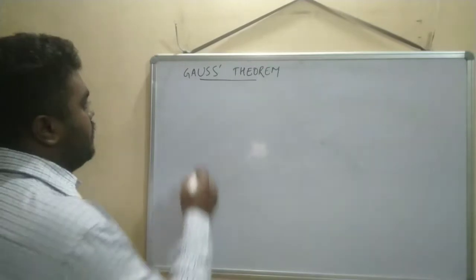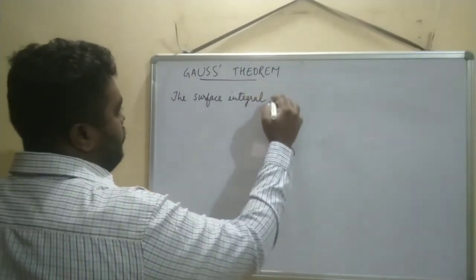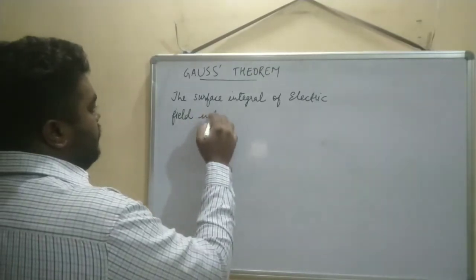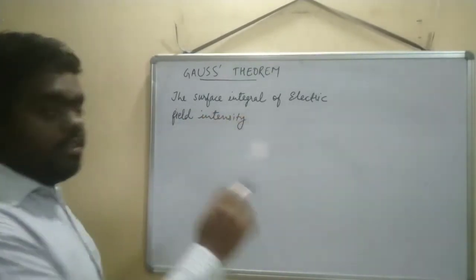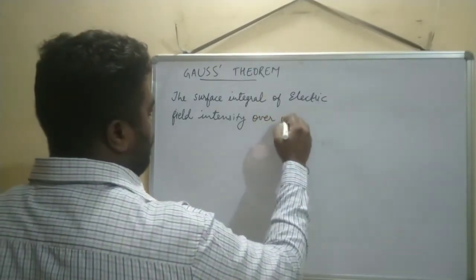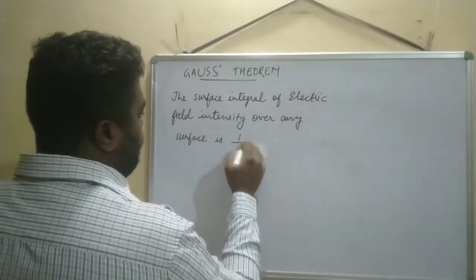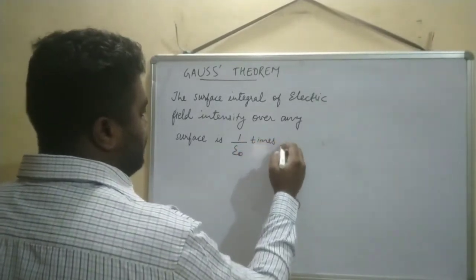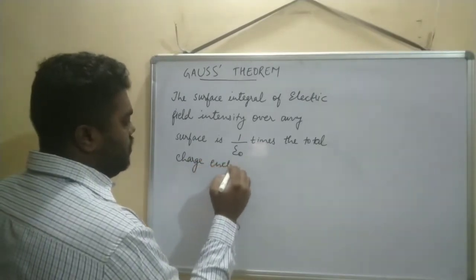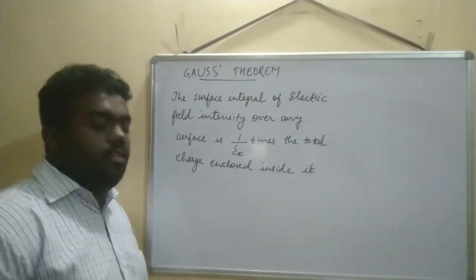The next topic is Gauss's theorem. First we will see the statement: the closed surface integral of the electric field intensity over any closed surface is equal to 1 over ε₀ times the total charge enclosed inside it.